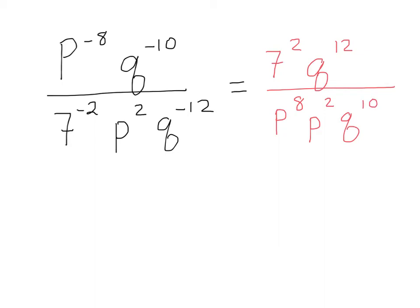Now, what you should recognize is that both these terms have like bases. They have like bases — it's p times p, but this one's p to the eighth and this one's p to the second. So when you multiply like bases, what do you do with their exponents?